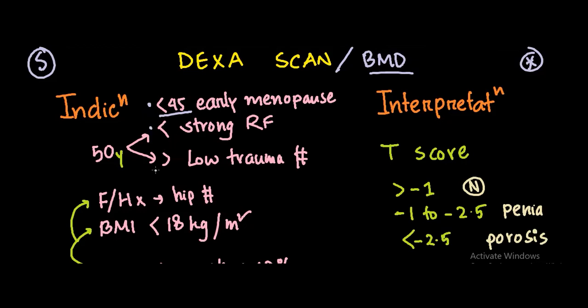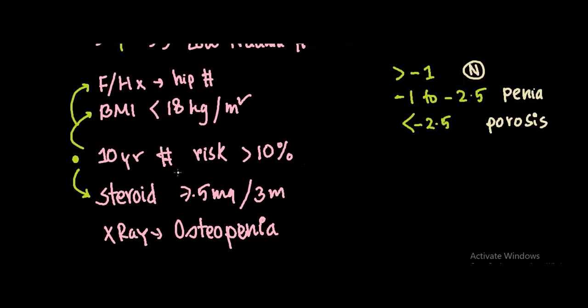If someone is over 50 and they have a low trauma fracture — that is, a fracture after falling from a standing height or less, such as falling on the bathroom floor — we have to do a DEXA scan. Those are the major indications.